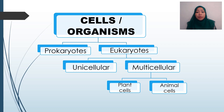Eukaryotes can be divided into two: unicellular and multicellular. Unicellular refers to one type of cell, while multicellular refers to organisms that consist of more than one cell. For multicellular, it can be divided into two: plant cells and animal cells.